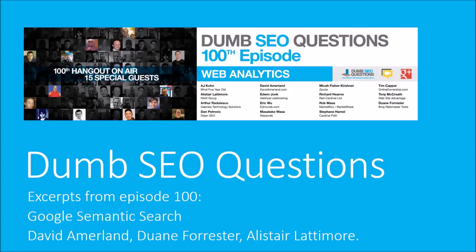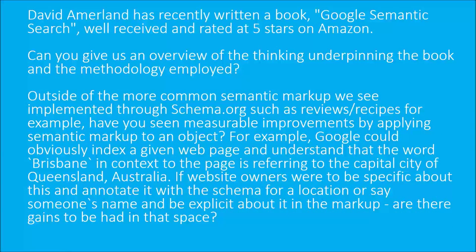Alastair Lattimore asked this question during the 100th episode of Dumb SEO Questions. The topic was Google Semantic Search. Alastair's question began: David Amerland has recently written a book, Google Semantic Search. It's been well received and rated at five stars on Amazon. Can David give us an overview of the thinking underpinning the book and the methodology employed?